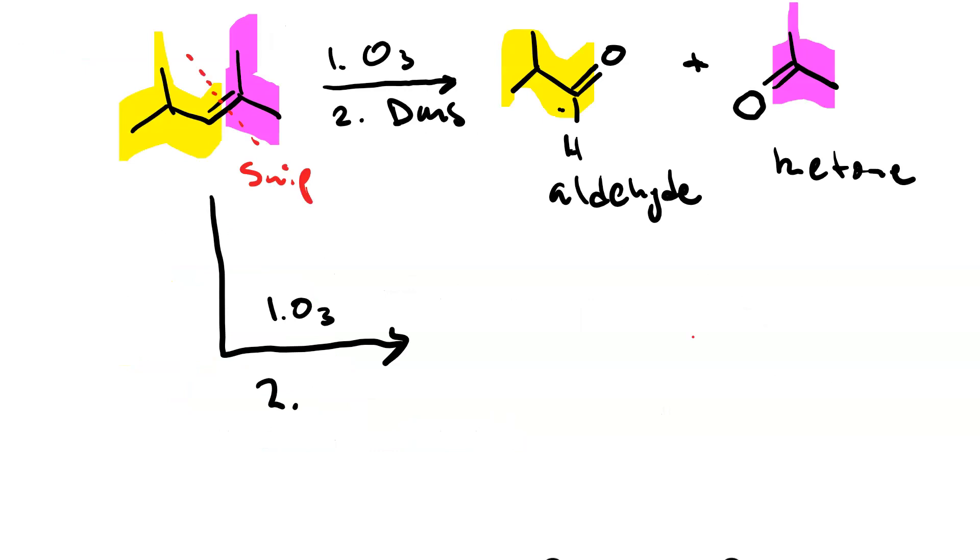If, in the second step, instead of using a reducing agent like dimethyl sulfide, we use an oxidizing agent like hydrogen peroxide, instead of forming carbonyls, we form carboxyls.